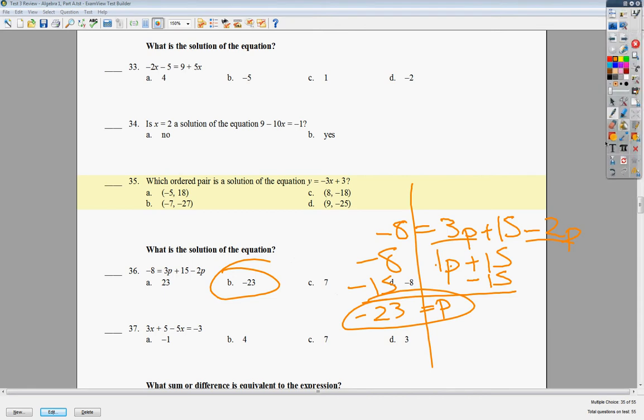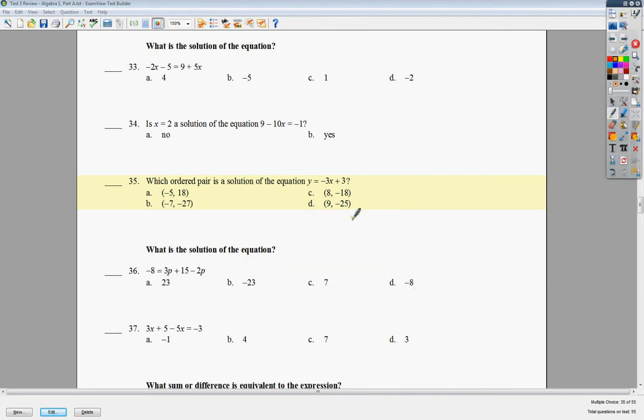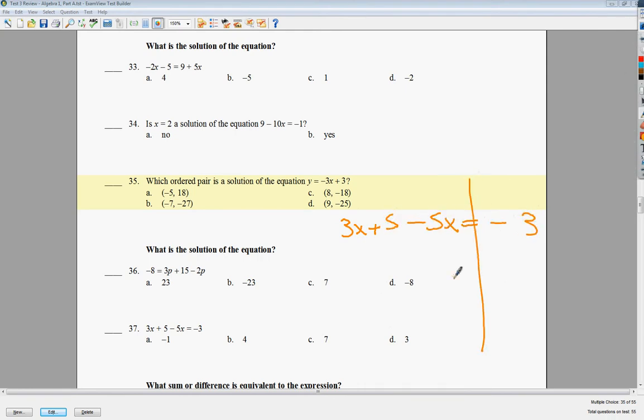The next one, 37, says 3x plus 5 minus 5x equals negative 3. Draw my line. Like terms on the same side, I do 3 minus 5 because I didn't cross any lines or anything. To get rid of plus 5, I need to subtract. Bring down negative 2x. Negative 3 minus 5 is negative 8. This shows times, so I need to divide. x is equal to 4. So my answer to number 37 is B.